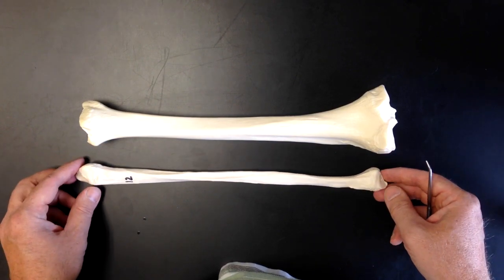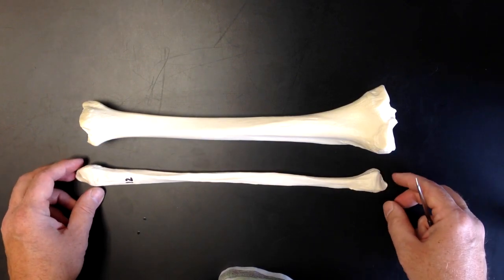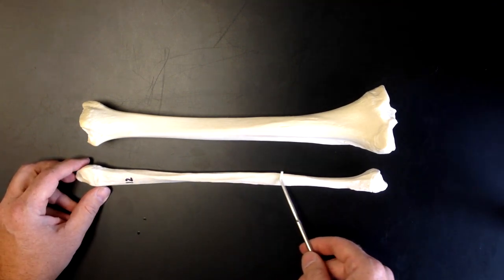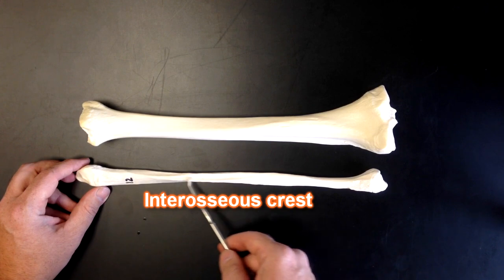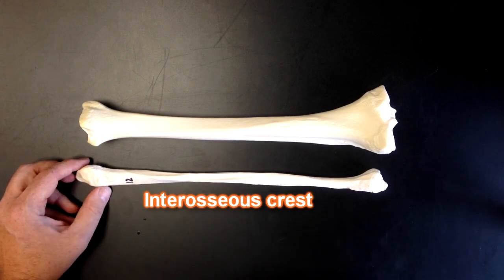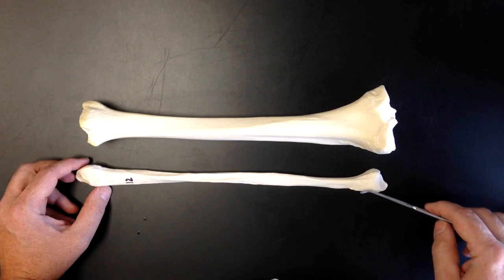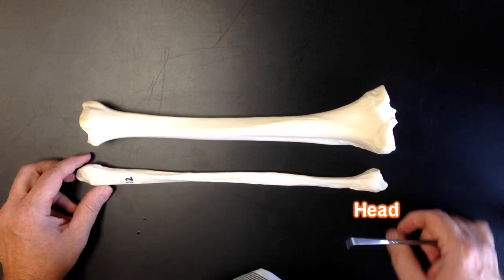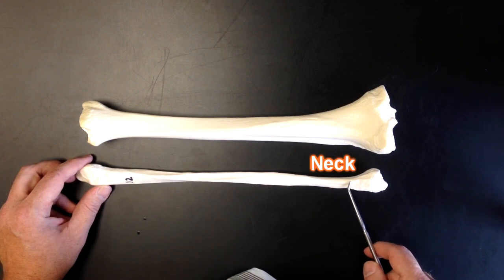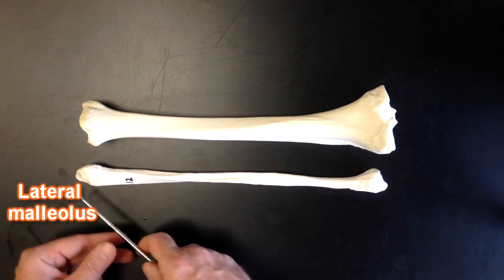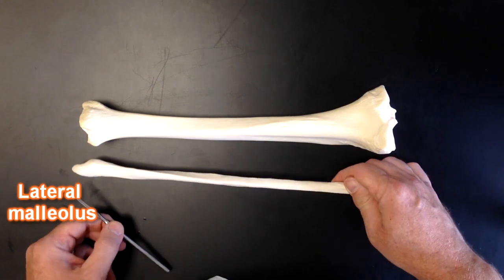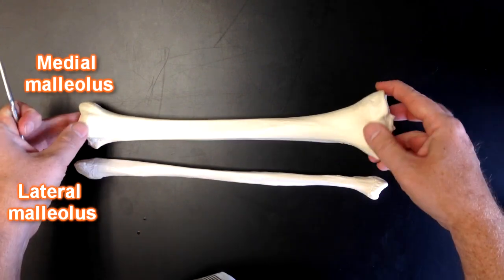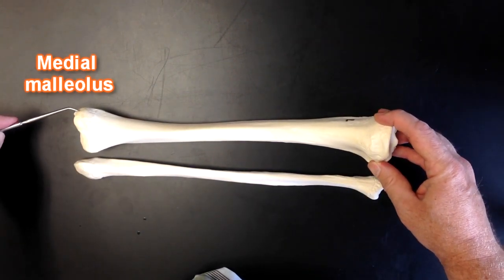Now, some of the structures we can see on the fibula. There aren't many, but here we go. This is going to be where the interosseous membrane attaches to the fibula. The head of the fibula is going to be up here at this end, and the neck of the fibula will be right here. The lateral malleolus, we would be able to see down here. This is the outside of your ankle, whereas the medial malleolus on the tibia was right here. That's on the inside or medial aspect of your ankle.